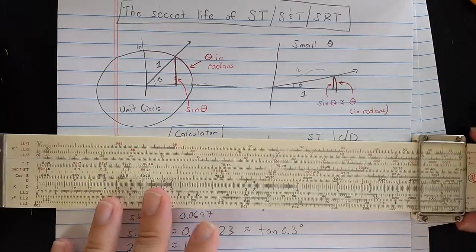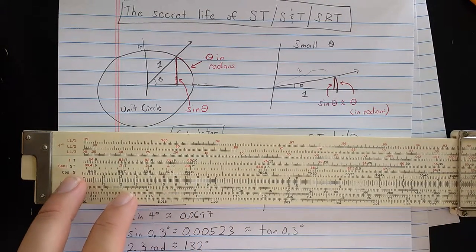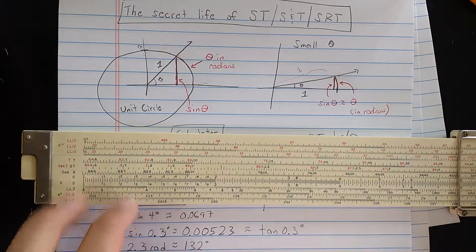Here I have the post-versalog slide rule, which has the ST scale here in between the S scale and the T scale.